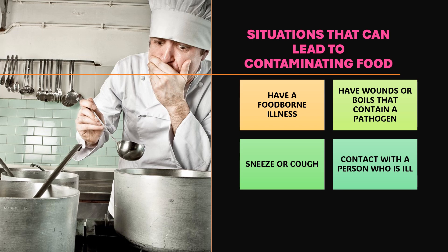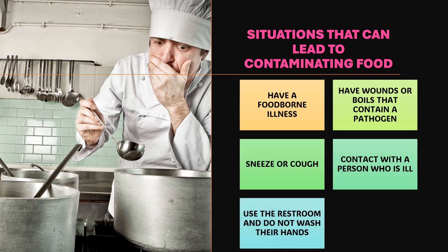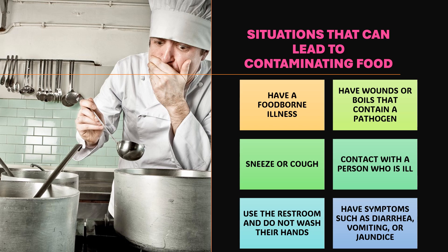Next is contact with a person who is ill. For example, a coworker has hepatitis A and you share utensils — you can get infected. Then while you prepare or cook the food, you can also contaminate it. Next, using the restroom without washing your hands afterward is prone to contamination. You also have symptoms of FBI such as diarrhea, vomiting, or yellowing of the skin (jaundice).